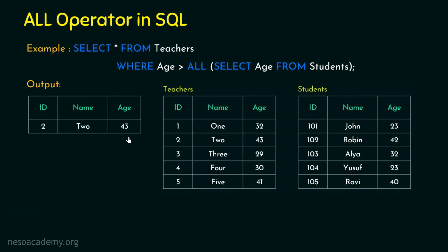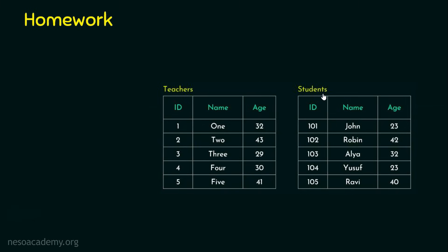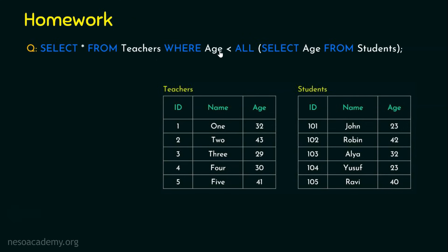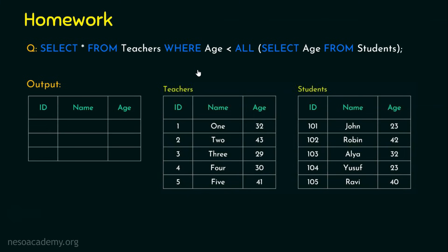Before we sign out, here is the homework question: using the same students and teachers tables, find the output of SELECT * FROM teachers WHERE age < ALL (SELECT age FROM students). I used greater than in the example, but this uses less than. Think about whether you'll get three rows or a different result, and share your answer in the comments. I hope the session was informative — thank you for watching.